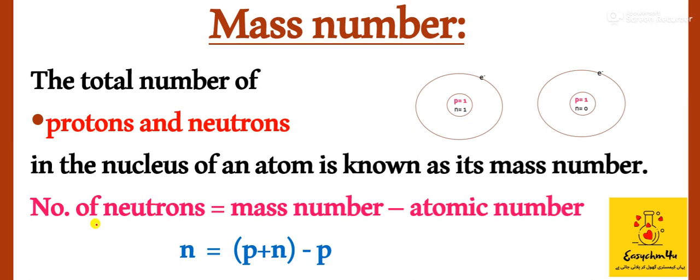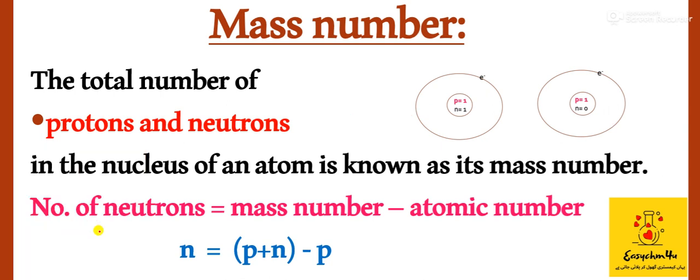The number of protons is the same on both sides. This hydrogen atom has mass number 2 — one proton and one neutron — and this one has mass number 1, because the neutrons are different. So students, here is a formula to find the number of neutrons: number of neutrons equals mass number minus atomic number.